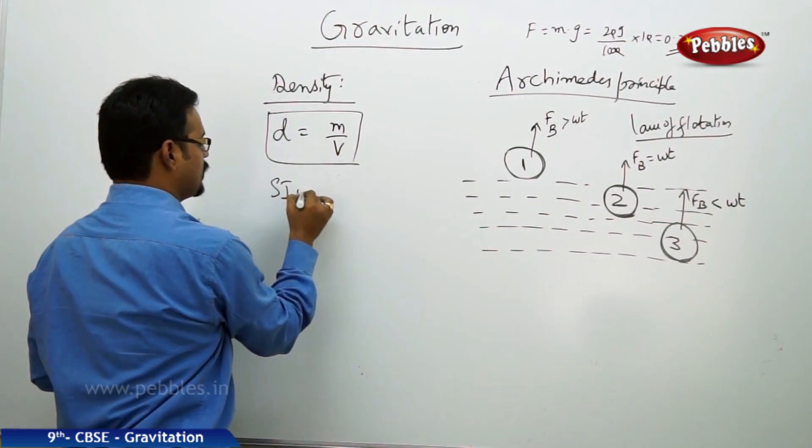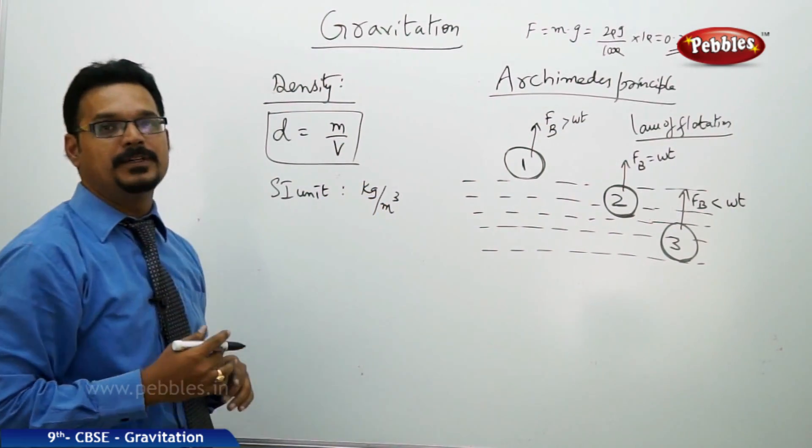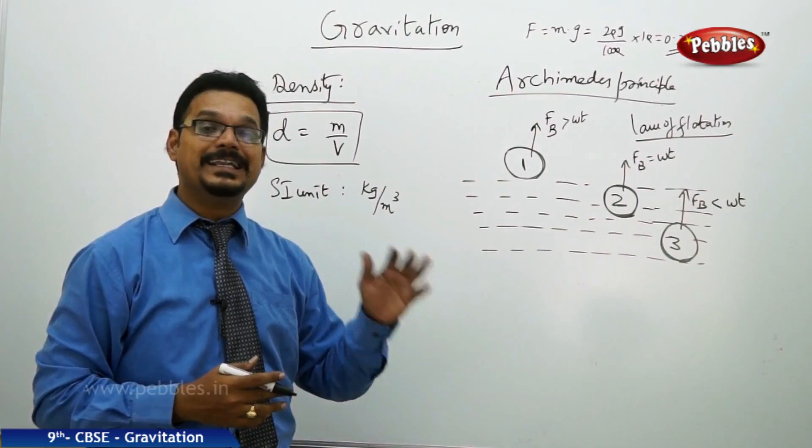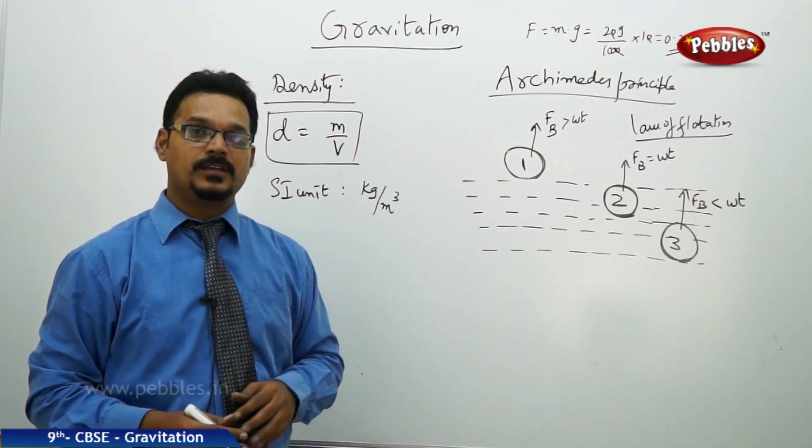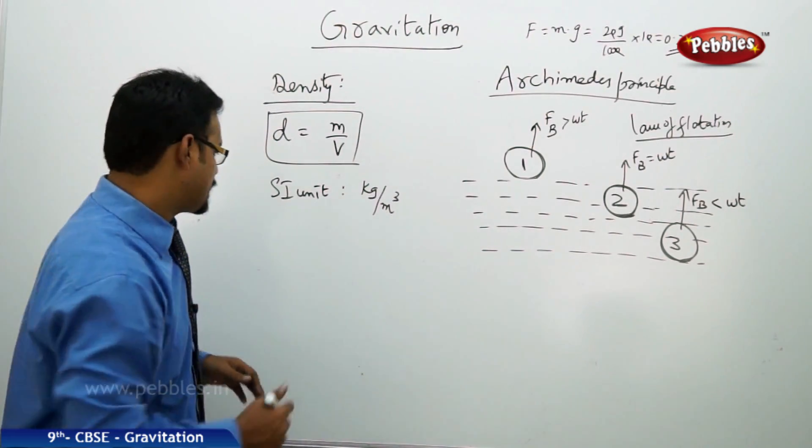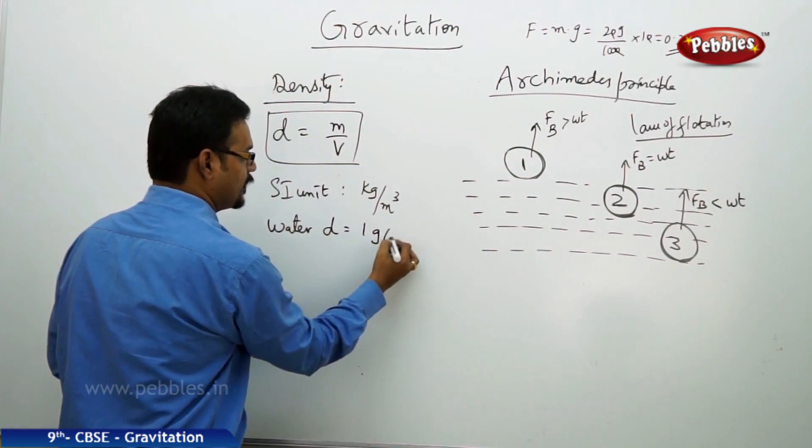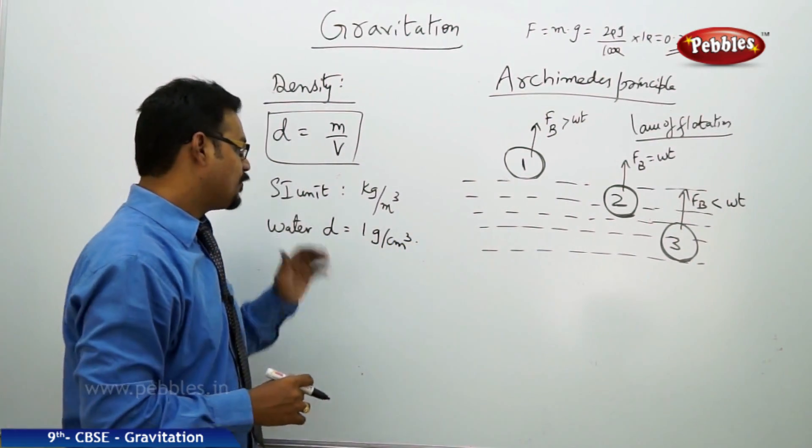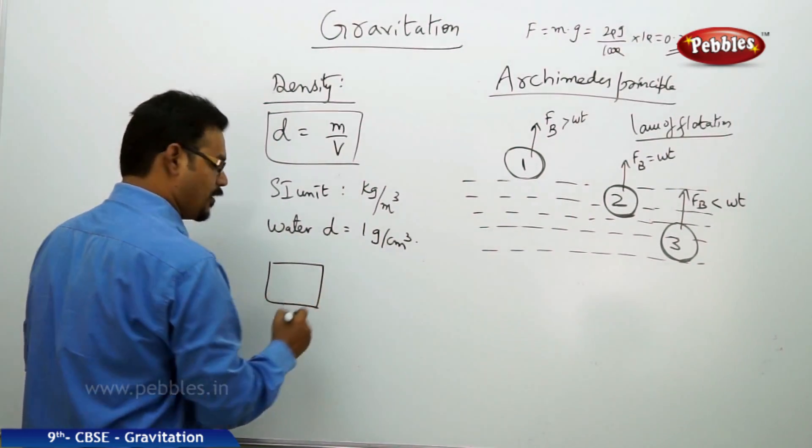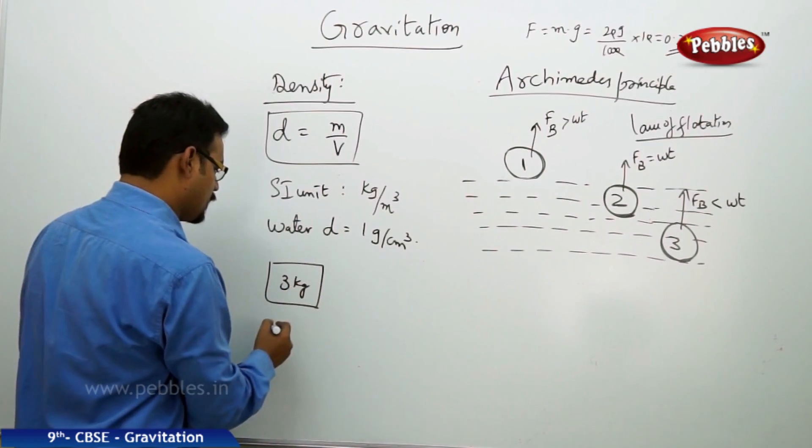The SI unit of density: mass is kg, volume is meter cube, so kg per meter cube. Different solids, different liquids, different gases have different densities. In other words, due to different densities we have different solids, different liquids, and different gases. For example, if we take water, water has a fixed density of 1 gram per centimeter cube.